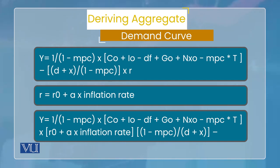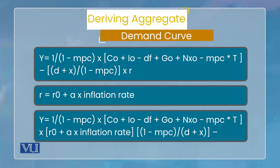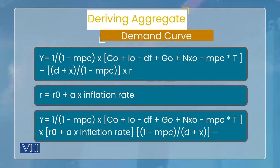When we substitute r from the monetary policy curve into the IS equation, r is eliminated and replaced by the inflation rate — because according to the monetary policy curve, the real interest rate is a function of the inflation rate. The resulting equation then relates total output and inflation rate, specifically for points where the goods market is in equilibrium and the central bank's endogenous response to inflation is incorporated. This gives us the aggregate demand curve equation.